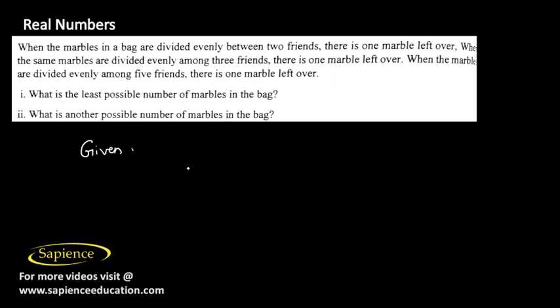So it's given there is a certain number, let's call it x, x number of marbles are there in the bag. x is the least possible number of marbles in the bag. When x is divided by 3 it gives remainder 1, when x is divided by 5 it gives remainder 1, and when x is divided by 2 it's also giving remainder 1.